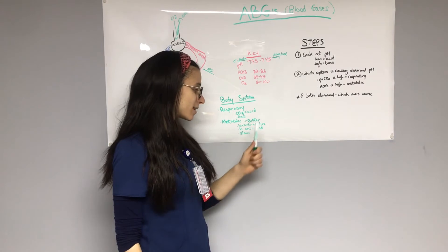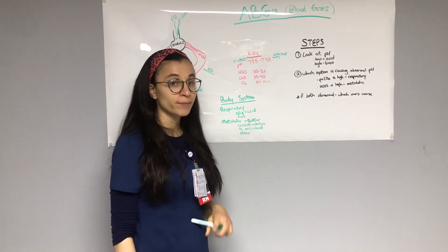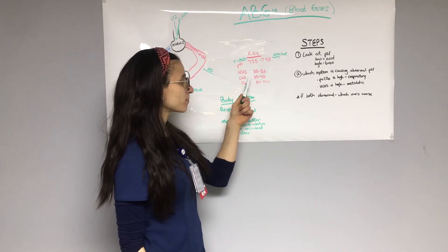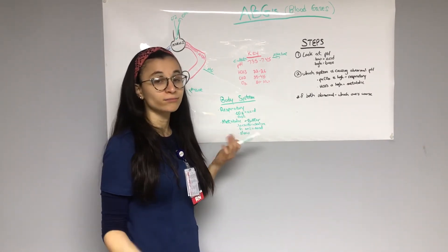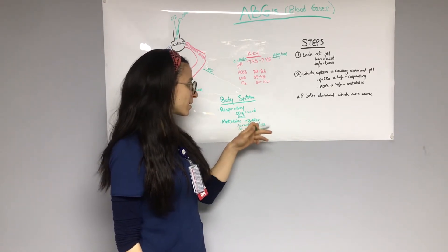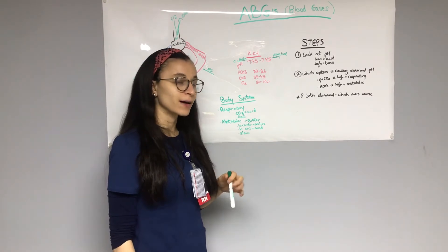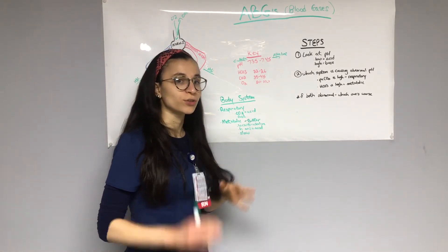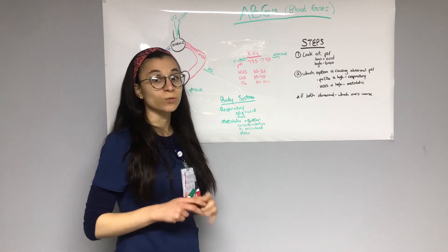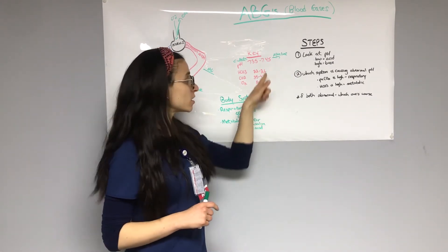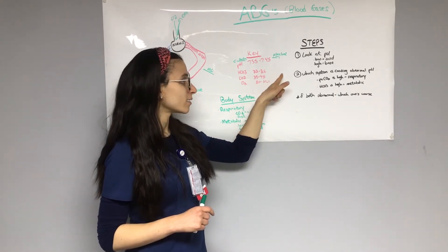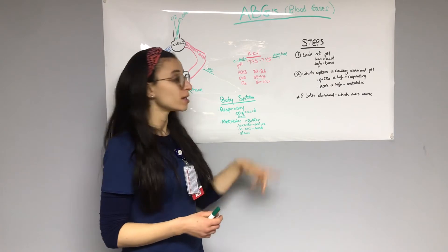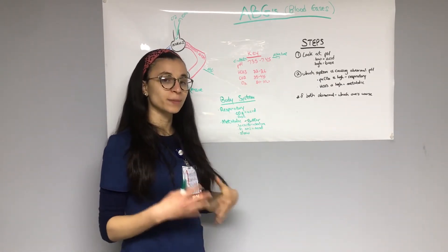The second thing you're going to look at is which system is causing the abnormal pH. Remember, we have two systems: the respiratory and the metabolic. The respiratory is the carbon dioxide; the metabolic is the bicarb. If the carbon dioxide is too high, then it's caused by the respiratory. If the bicarb is too high, it's caused by the metabolic system. If they're both abnormal, you look at which one is worse — which one is way off. For example, a bicarb of 28 is two off from normal, and a carbon dioxide of 60 — the carbon dioxide, which is the respiratory system, is the one that's causing it, and the metabolic system is trying to buffer it to make it normal again.